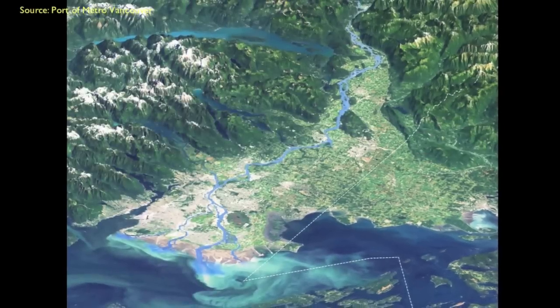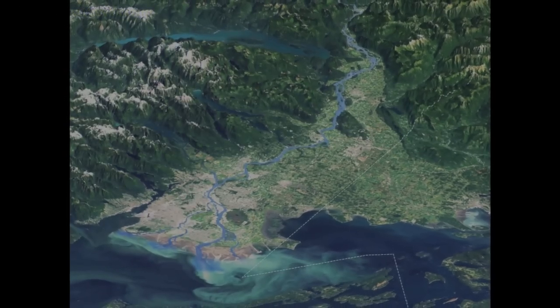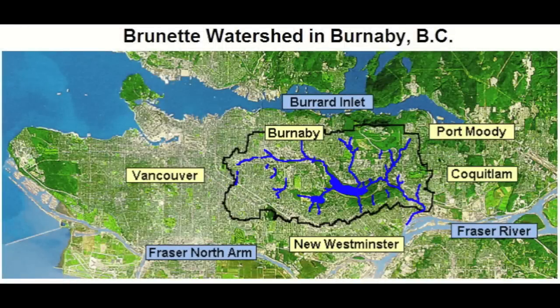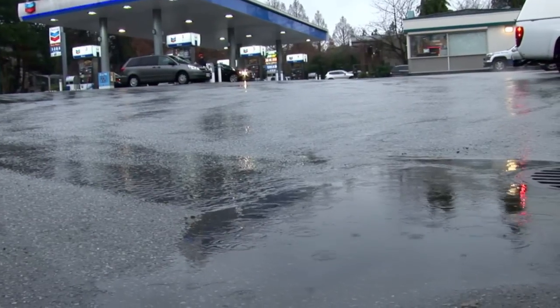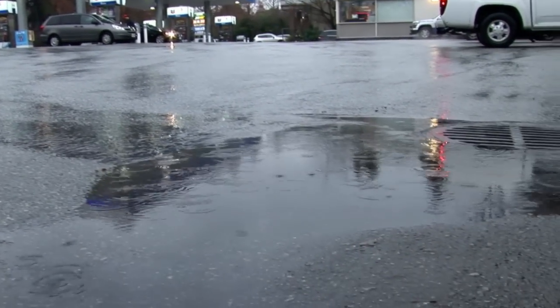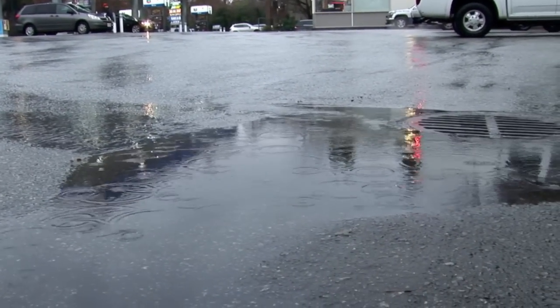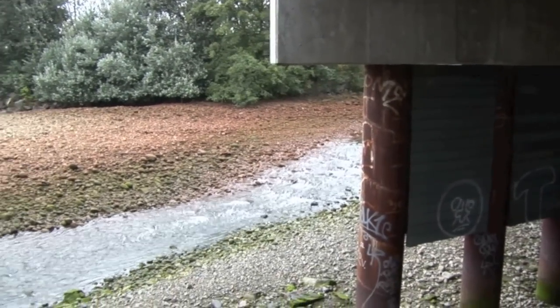Watersheds are the ultimate and final units for stormwater management. A watershed is an area of land that drains to one water body, such as a lake or the ocean. Everything is connected in a watershed, and what happens upstream impacts conditions downstream.